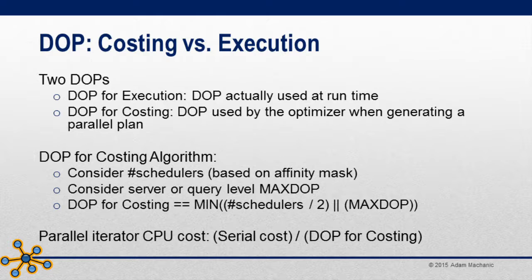DOP — degree of parallelism. What we saw in the prior section was DOP for execution, but there are actually two DOPs: DOP for costing and DOP for execution. DOP for costing is used when the optimizer is coming up with plans. It looks at how many schedulers there are — schedulers are the logical abstraction over physical CPUs that SQL OS uses — and then it looks at the server-level maxDOP setting, or the query-level maxDOP setting if you have one set, which overrides the server level. It takes the minimum of the number of schedulers divided by two, or your maxDOP.